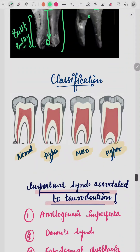The classification has four types based on the crown-root ratio. In hypotaurodontism, the pulp chamber is enlarged a little. In mesotaurodontism, it enlarges more. In hypertaurodontism, the bifurcation area moves far away from the cervical region. Normal is the baseline comparison.